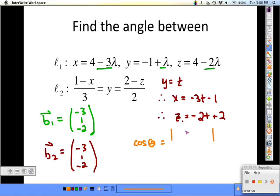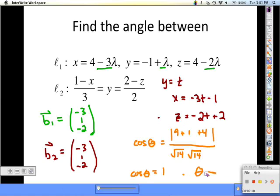We're going to have 9 plus 1 plus 4 on the top - that's the dot product - over the magnitudes of these, and the magnitude of each is the square root of 14. Cosine theta equals 1, therefore theta, the angle in between, is equal to 0 degrees.